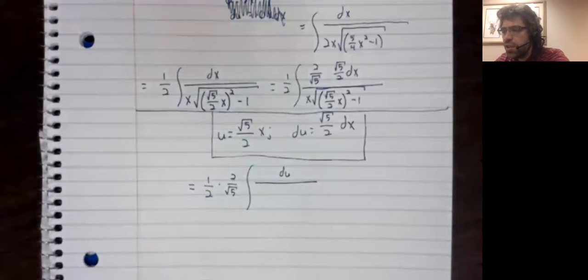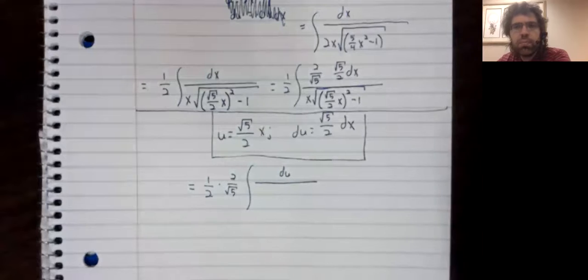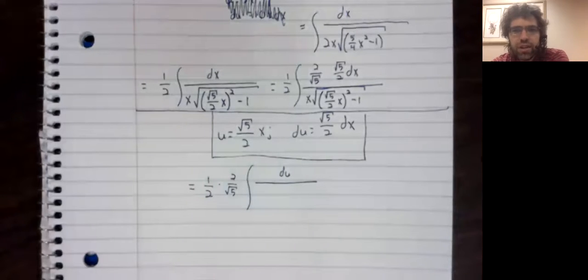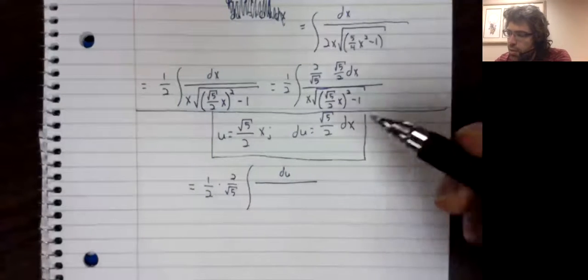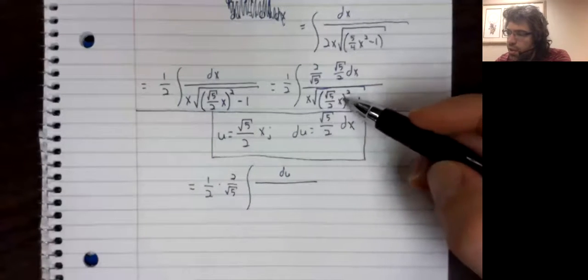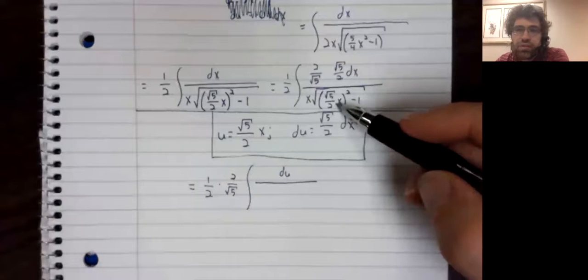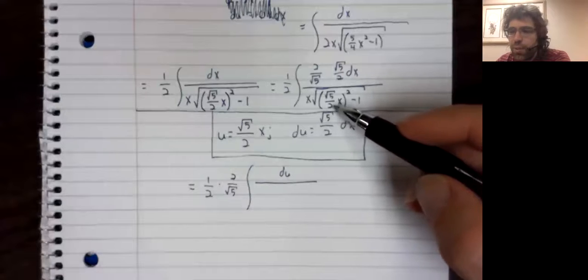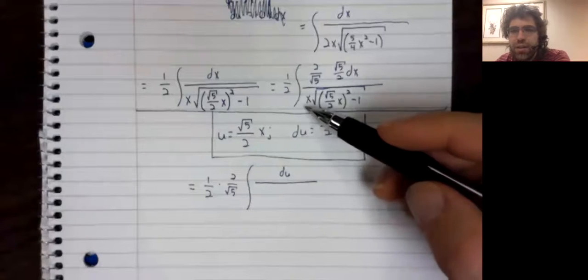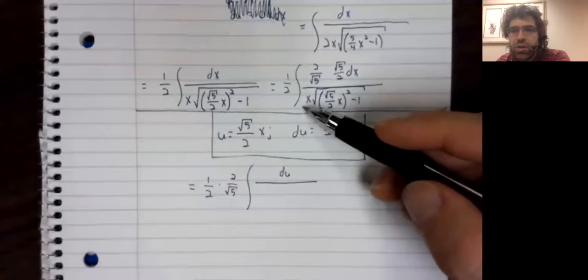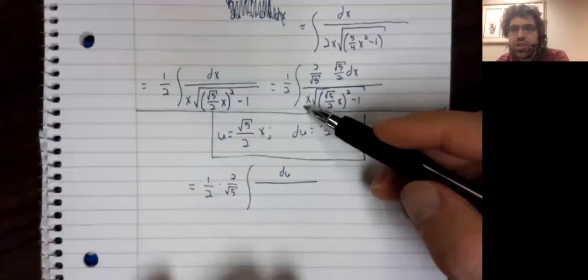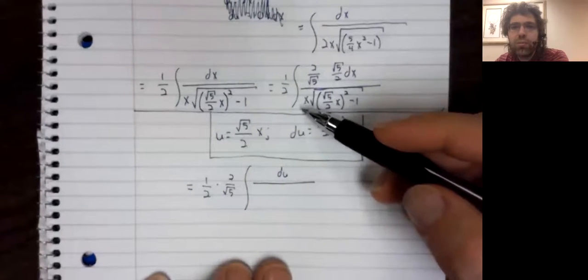So there is here a complication that we didn't run into before. We need to turn this into u. That's fine. This is u squared, just what I think we needed. But then we need to turn this x into u as well.